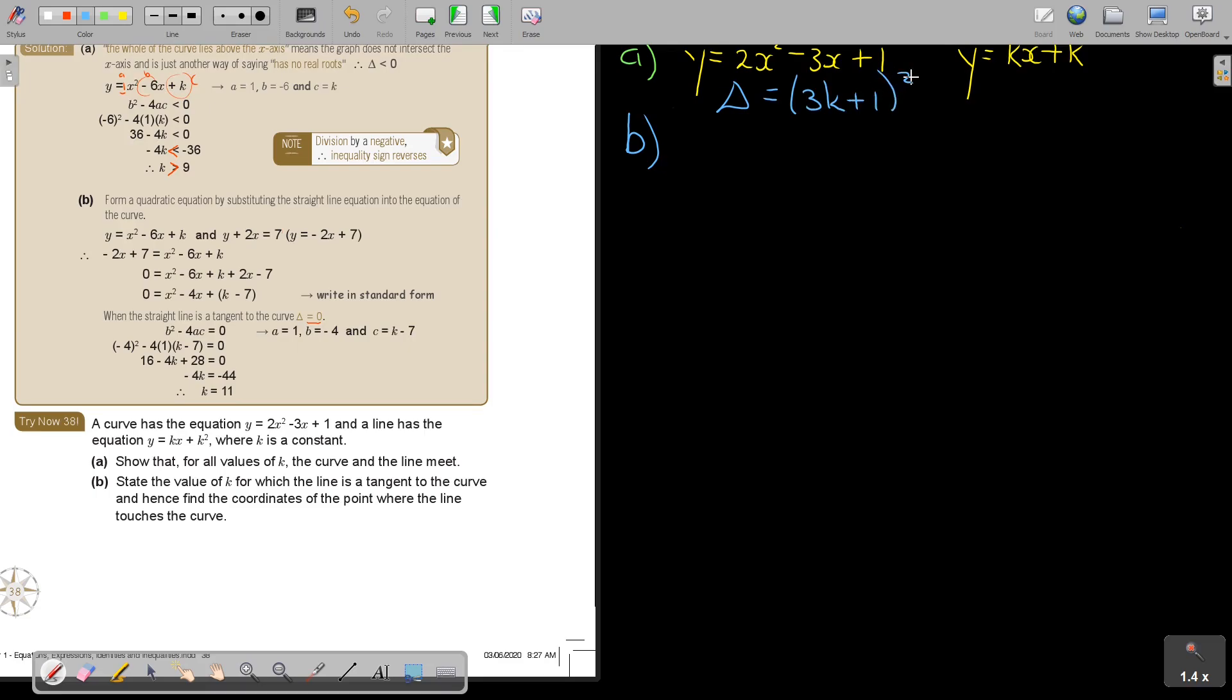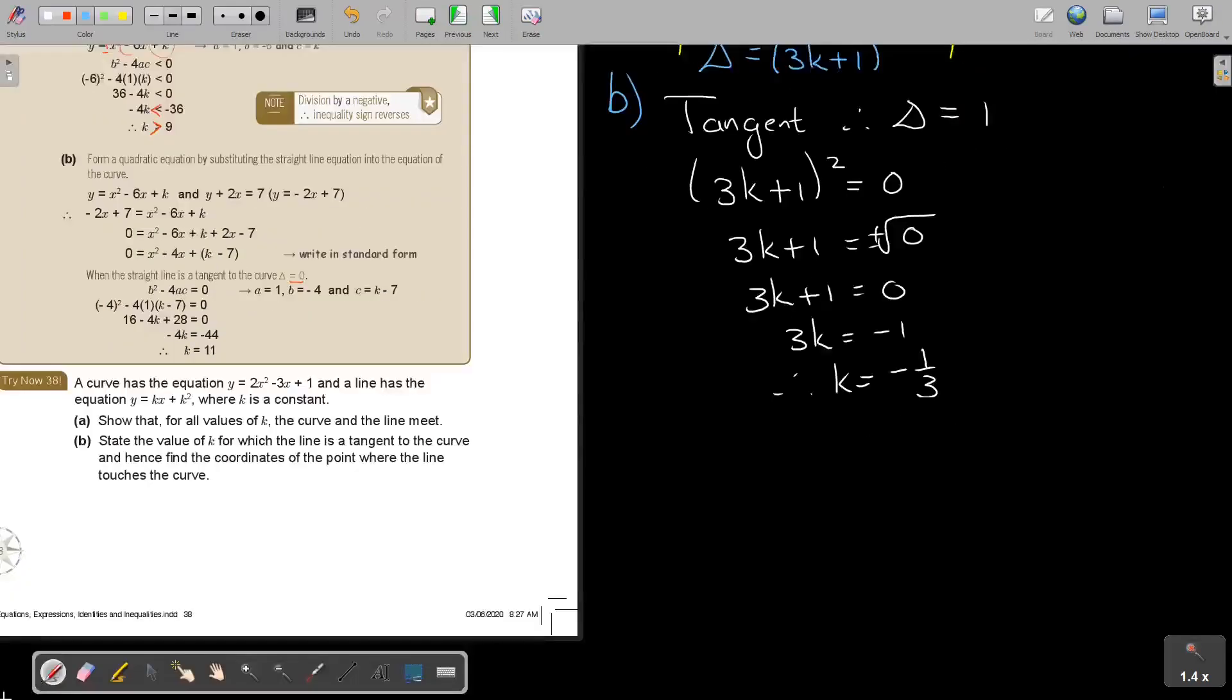So for a tangent, the discriminant will be equal to 0. So 3K plus 1 squared will be equal to 0. Now, if you simplify this or take the square root, but you will get at the end, so you can take the square root or you can multiply out. But I think it's like this. Take the square root of 0 plus minus, but it's 0. So then it's 3K plus 1. So it's 3K equals negative 1. And so therefore, K is negative 1 third.